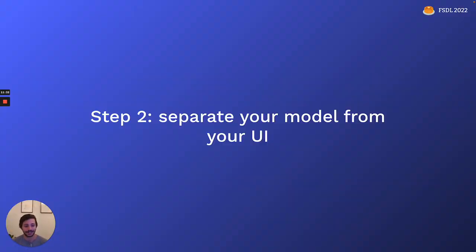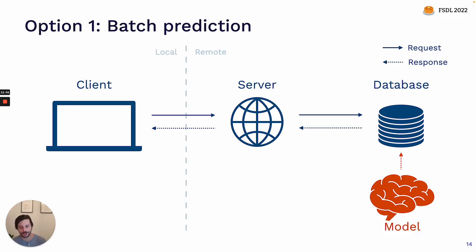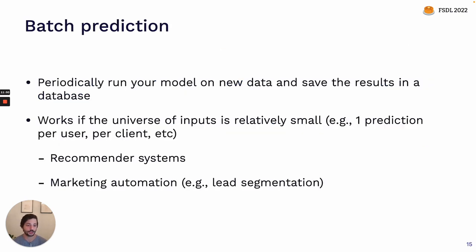That brings us to the second step: pulling your model out of the UI. There are a couple of different ways to do this. The first is to pull your model out of the UI and have it interact directly with the database — this is called batch prediction. Periodically, you will get new data in, run your model on each of those data points, and save the results of that model inference into a database.